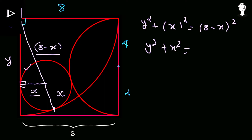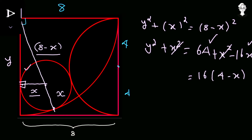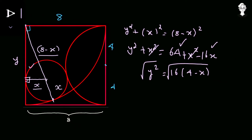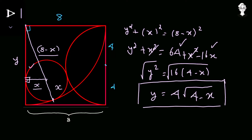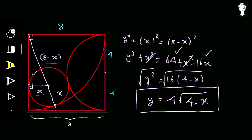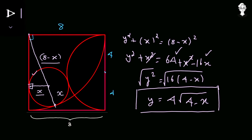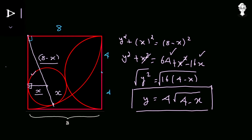Applying the Pythagorean theorem: Y² + X² = (8 − X)². Expanding: Y² + X² = 64 + X² − 16X. The X² terms cancel, giving Y² = 64 − 16X = 16(4 − X). Taking the square root, Y = 4√(4 − X).